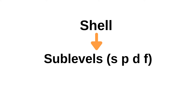Each shell is broken into sublevels called the S sublevel, the P sublevel, and the D sublevel, as well as the F sublevel. We only look at the first 36 elements at level 3, and these elements don't have F sublevels, so we ignore the F sublevel for now.